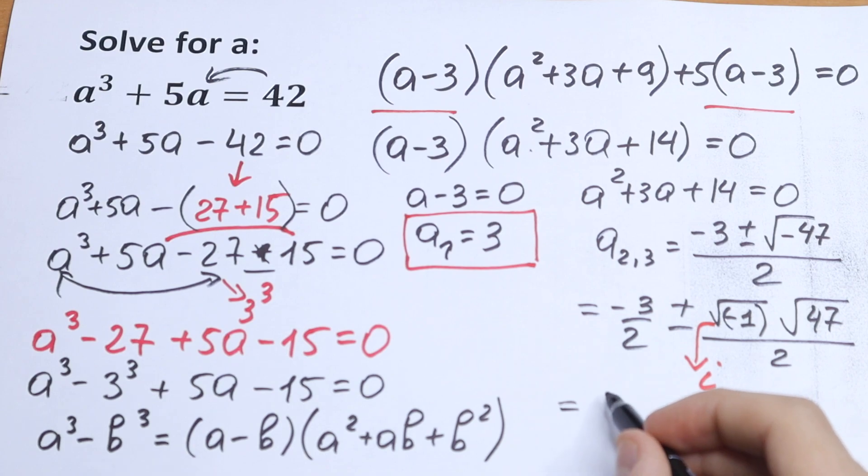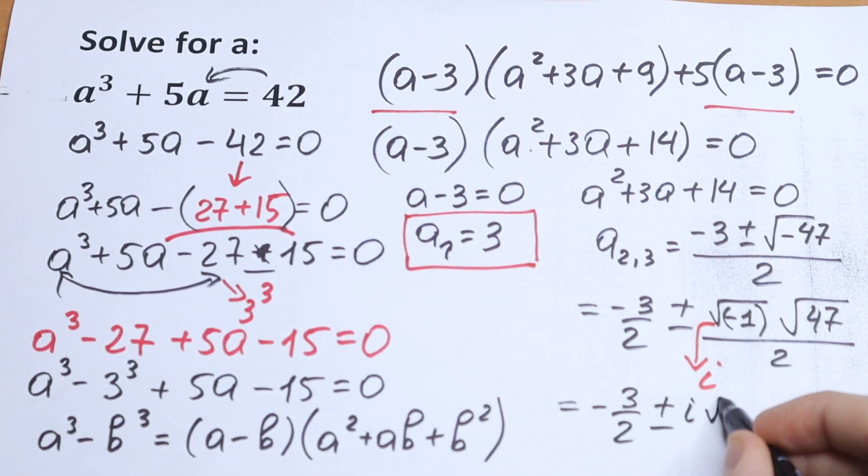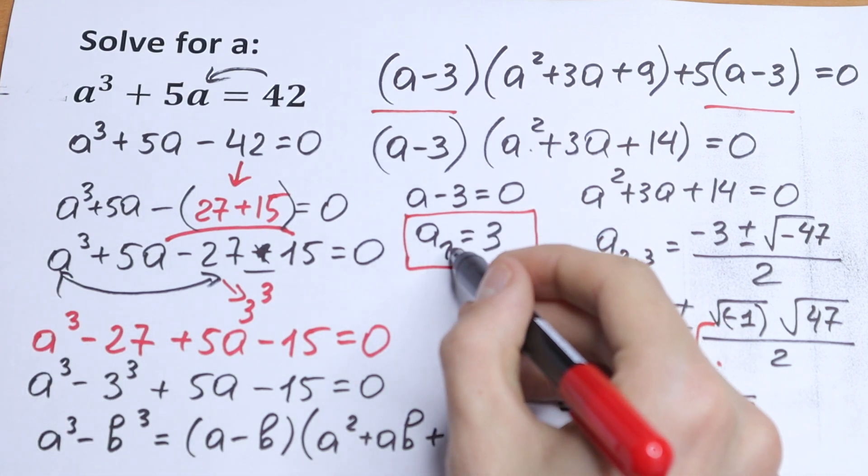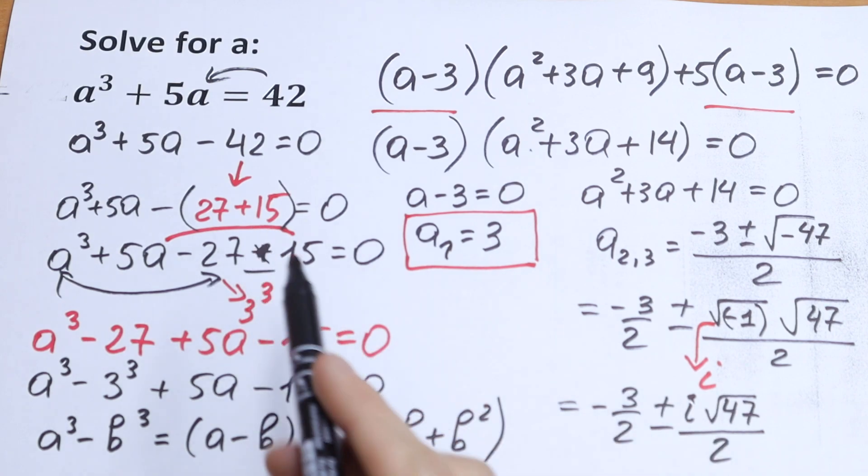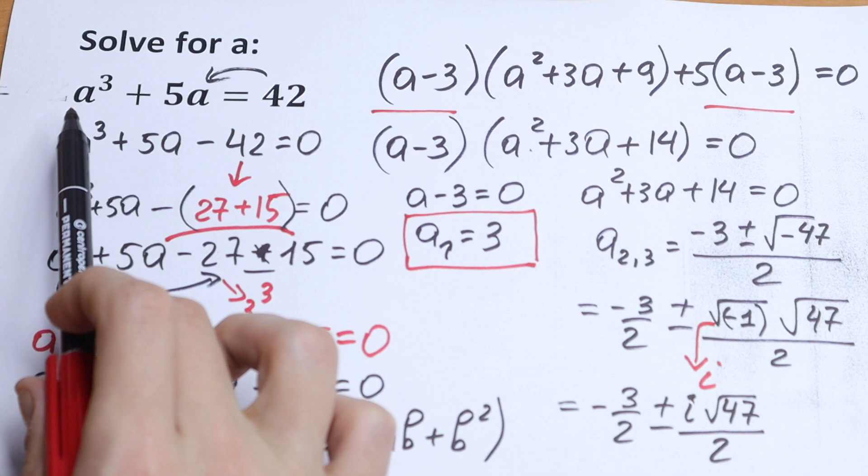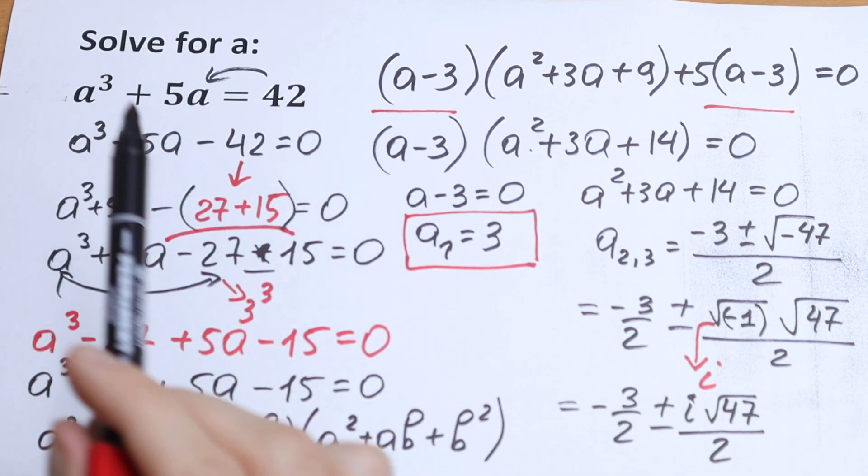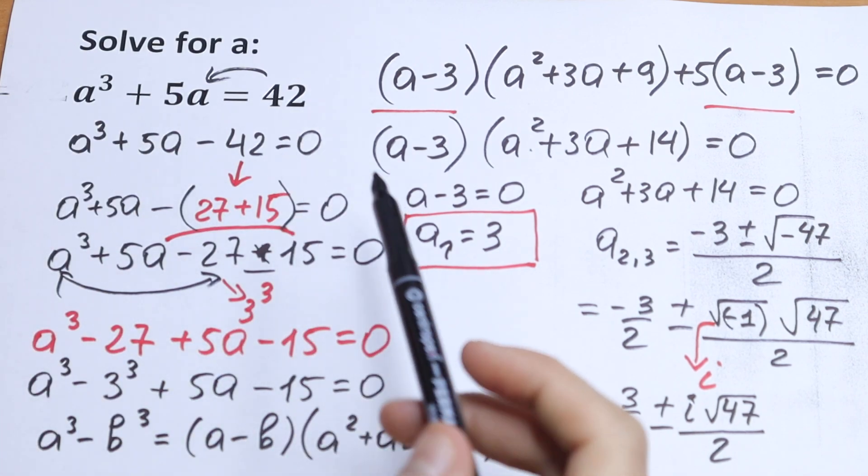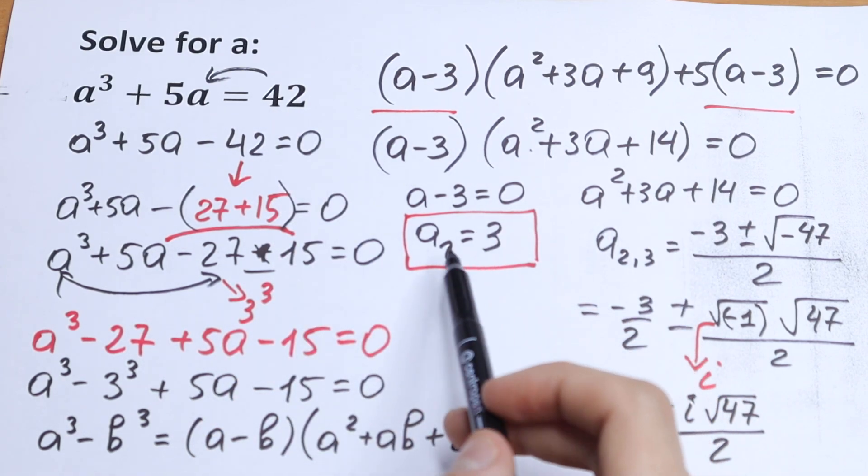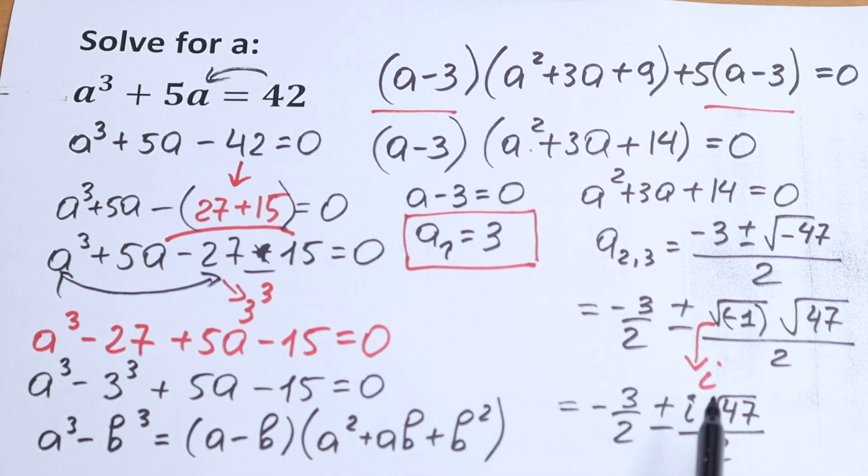And the final result will be minus 3 over 2 plus minus i square root of 47 over 2. This will be our second and third root. This will be our first root, second and third. So we will have three roots right here. Of course we can check it. We will have a³ plus 5a. So as a result we will have 27 plus 15. We will have our 42. So this root is good for us. But this root is real number root. This will be complex root.